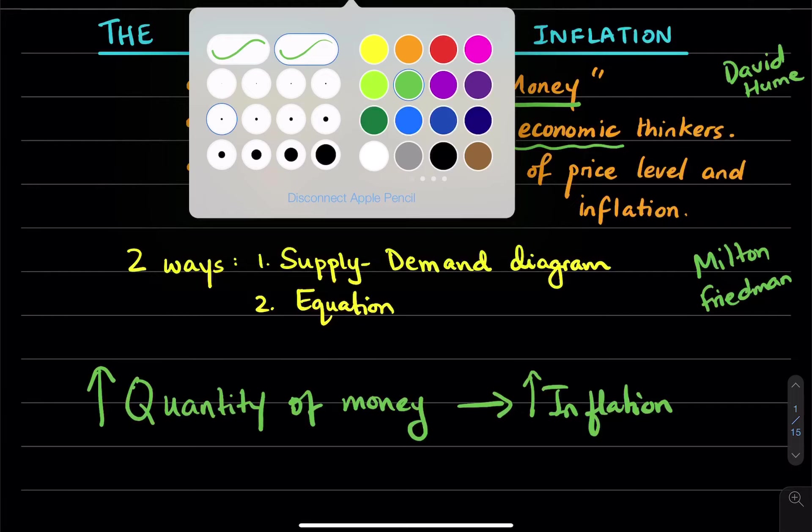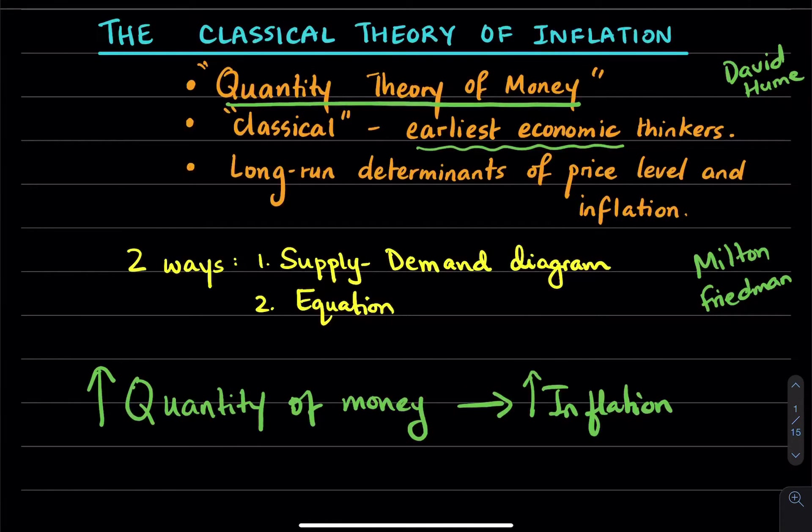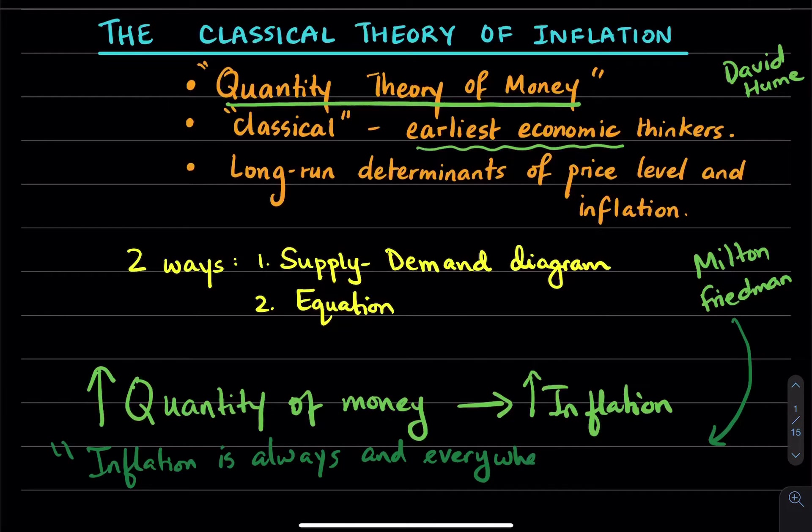Milton Friedman won the Nobel in the economic sciences and actually said that inflation is always and everywhere a monetary phenomenon. Which is to say that inflation is typically produced by a rapid increase in the quantity of money in the system relative to output.